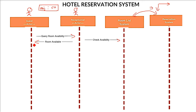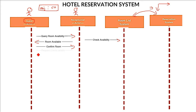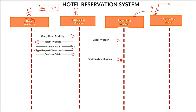The guest can do two things: accept the room or say no. There would be an if-else box placed across the three lifelines, but we are keeping it simple. We assume the guest confirms they want the room. Once confirmation is done, the reception asks for client details — this could be a social security number, Aadhaar card, PAN number, or any acceptable ID. The guest confirms their identification details, and reception goes to the room list system to provisionally book the room, since payment has not yet been done.